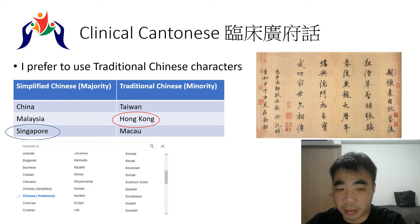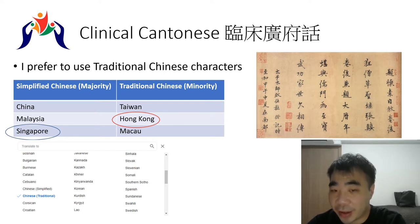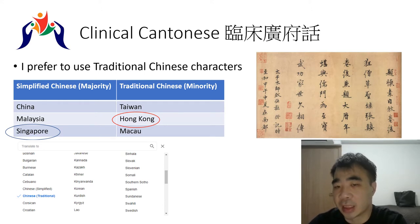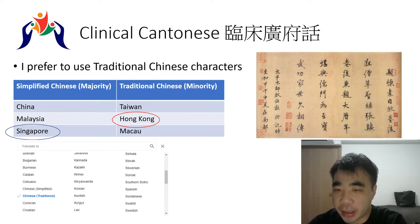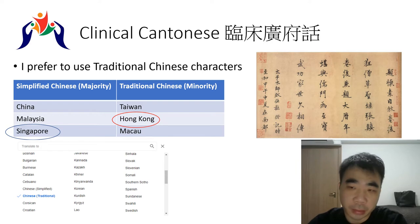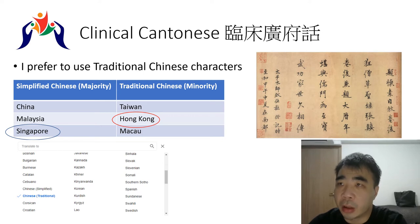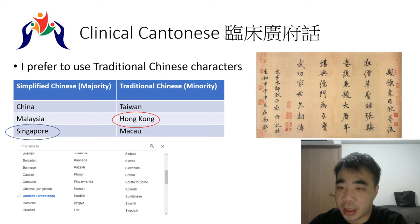Foreigners learning Chinese are more likely to encounter traditional Chinese characters. Also, if you study old Chinese history, literature, or traditional Chinese medicine, old books are written in traditional Chinese. Even old literature in Korean and Japanese also shows traditional Chinese characters.